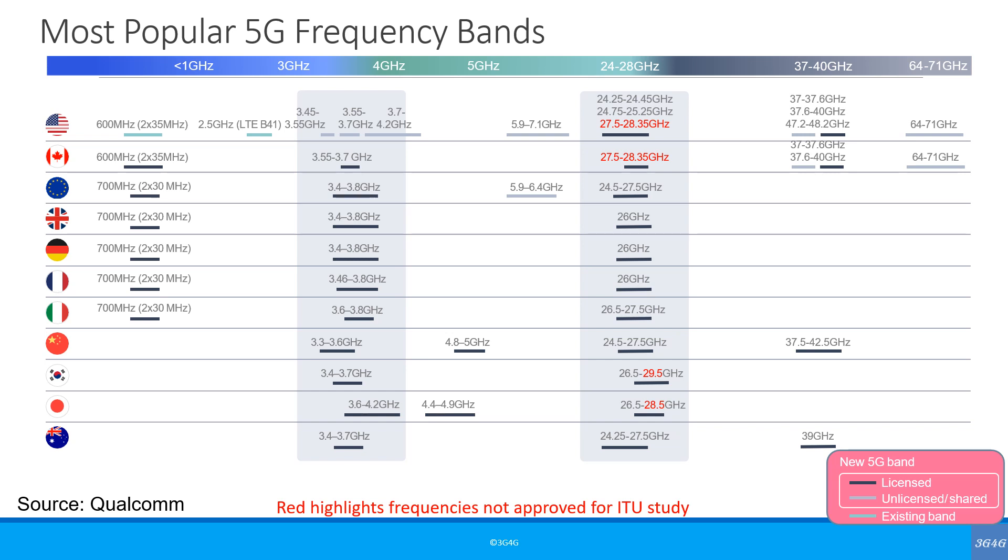So, this is a chart from Qualcomm. As you can see, these are the bands being used for 5G trials and in many cases already auctioned. You will notice that I have highlighted the 28 GHz band in red, as I explained earlier. The four countries using this band heavily are the USA, Canada, Japan, and South Korea.